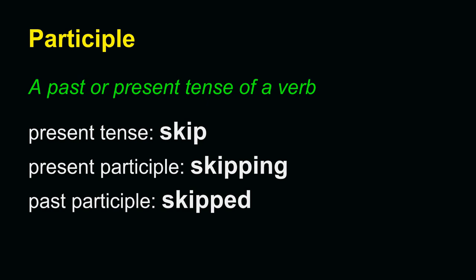With the verb skip, your present tense is skip, your present participle is skipping, and your past participle is skipped. English language speakers often understand the difference among these different forms in usage, but can rarely reflect on their differences. Skip, skipping, skipped.